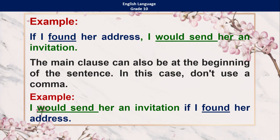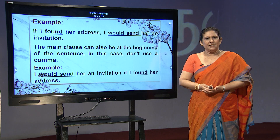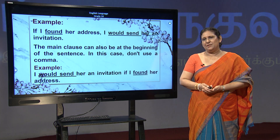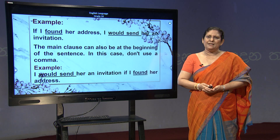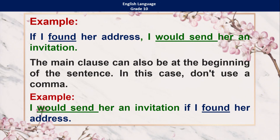Look at this example: 'If I found her address, I would send her an invitation.' Here, she did not find the address, so she could not send the invitation. I have also written the same thing differently: 'I would send her an invitation if I found her address.' Hope you can remember, I mentioned this in type 1 also — when you start the sentence with an if clause, there should be a comma. But if you take the main clause at the beginning, you avoid that comma, because 'if' stands as a conjunction joining the two parts of the sentence.